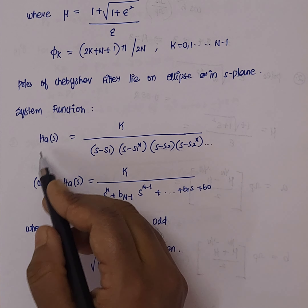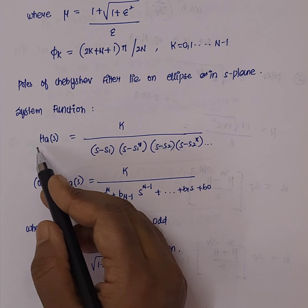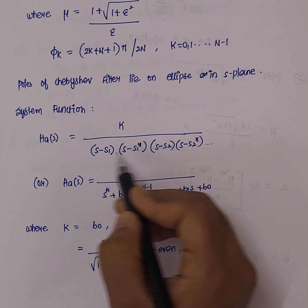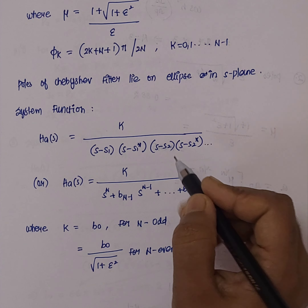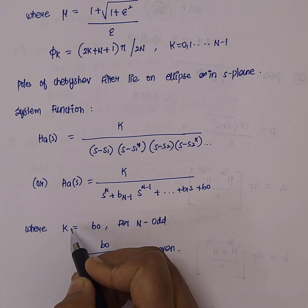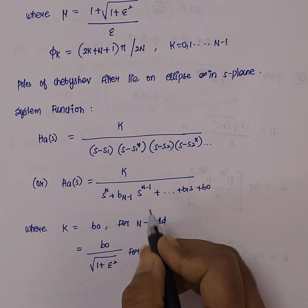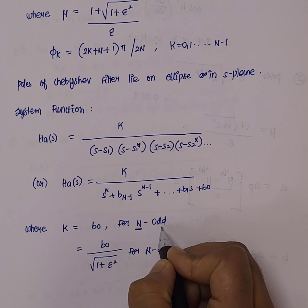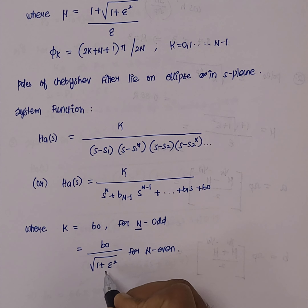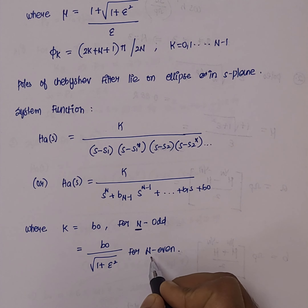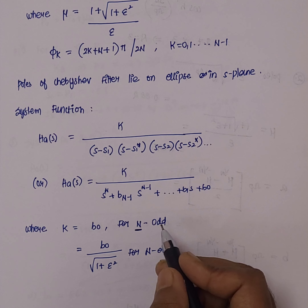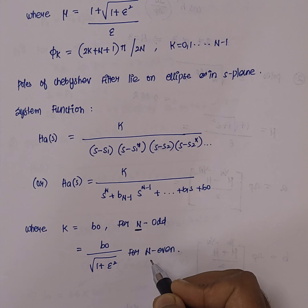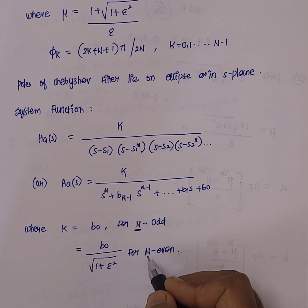We now form the transfer function H_a(s), which equals a constant k divided by a polynomial in factored form. If n is odd, k equals b0. If n is even, k equals b0 divided by square root of 1 plus epsilon squared. This is the transfer function, representing the key difference between the Butterworth and Chebyshev filters.